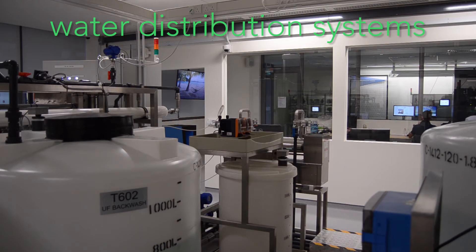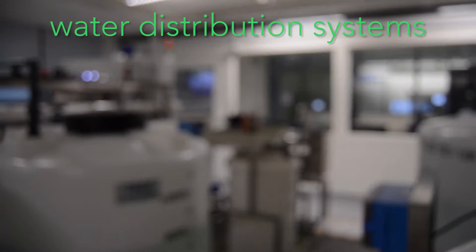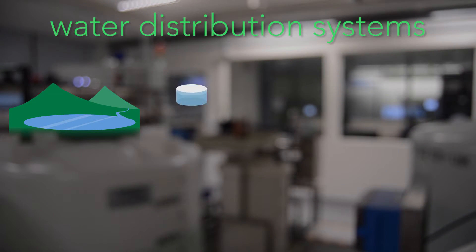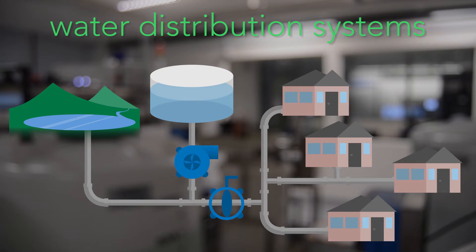Water distribution systems are also becoming more and more automated. These systems are the collection of reservoirs, tanks, pumps, valves, and pipes that deliver drinking water to our taps.